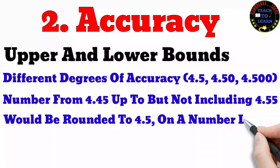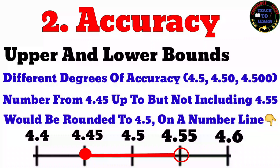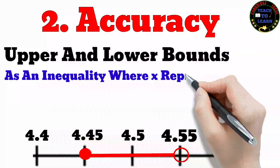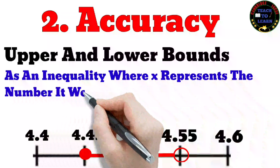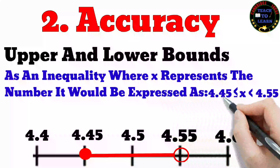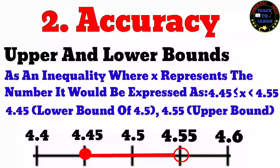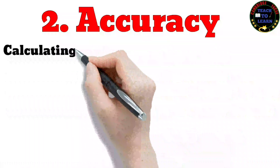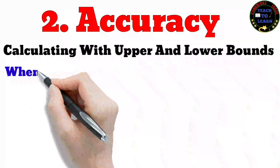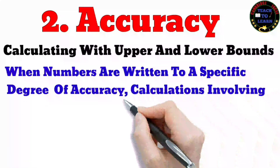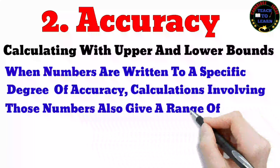Numbers can be written to different degrees of accuracy. For example, 4.5, 4.50, and 4.500 all represent the same value but with different precision. Any value from 4.45 up to but not including 4.55 would be rounded to 4.5. As an inequality where x represents the number: 4.45 ≤ x < 4.55. Here 4.45 is the lower bound and 4.55 is the upper bound of 4.5.